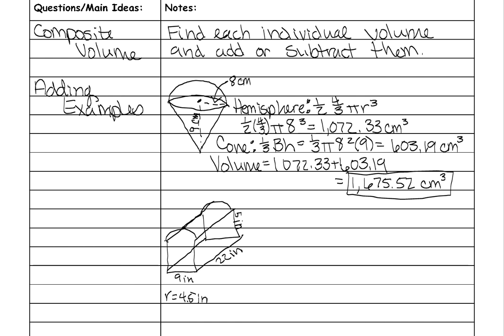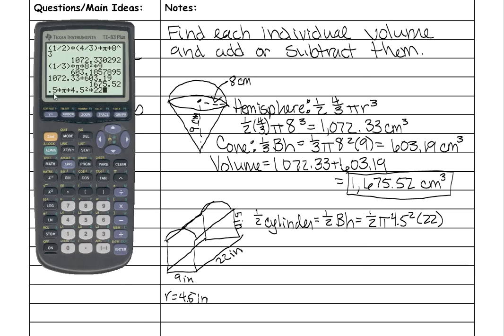First, find the volume of the half cylinder by taking half of the cylinder formula: half times the area of the base times the height. The base is a circle, so it's 0.5 times pi times the radius (4.5) squared times the height of the cylinder, which is laying on its side, so 22. Put all that in your calculator — using 0.5 instead of one-half as a decimal is the same thing and easier to type — and you get 699.79 cubic inches.